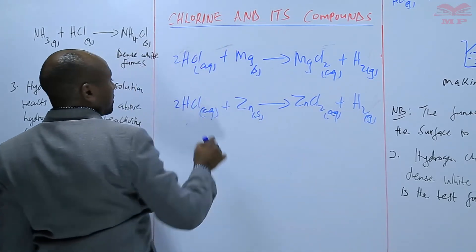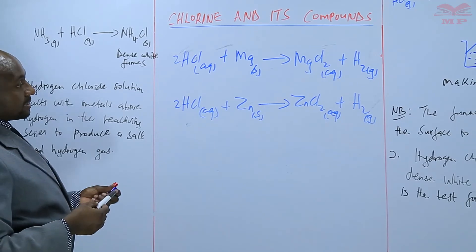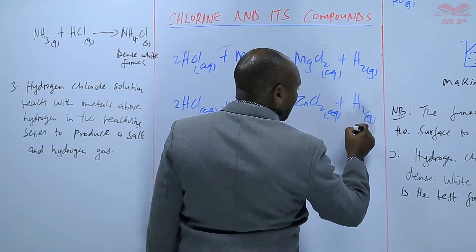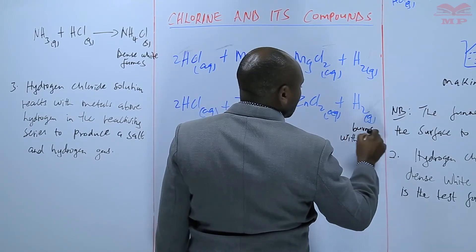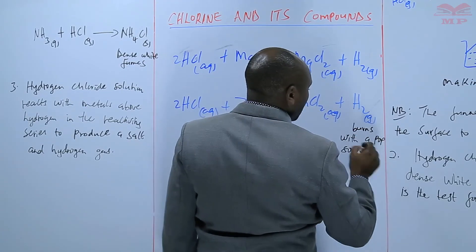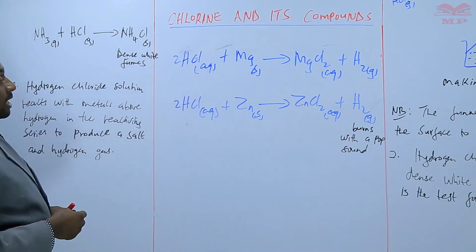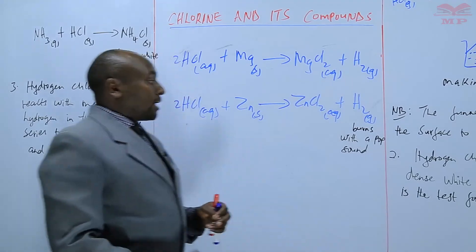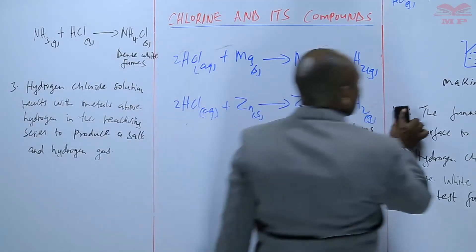If you have a metal such as zinc then we shall have the salt which will be zinc chloride plus hydrogen gas. So you can see that in these cases hydrogen gas is being liberated, is being produced, and you know that hydrogen gas burns with a pop sound when mixed with air. So that is basically how to test that the gas that is being produced is actually hydrogen gas.